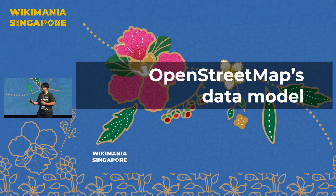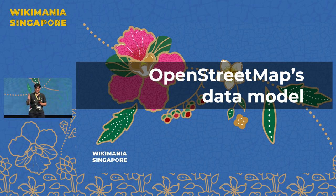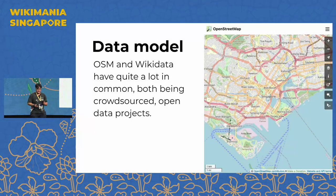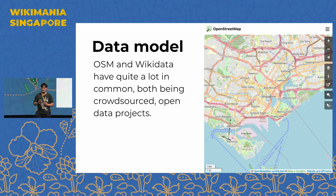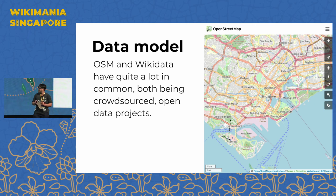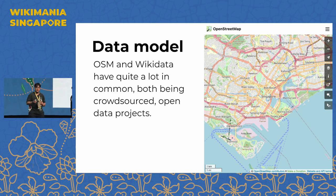Now let's go into the data structure of OpenStreetMap. Both OpenStreetMap and Wikidata have quite a lot in common: both are community-driven, both are crowd-sourced, both are powered by open source software, and both are open data projects.